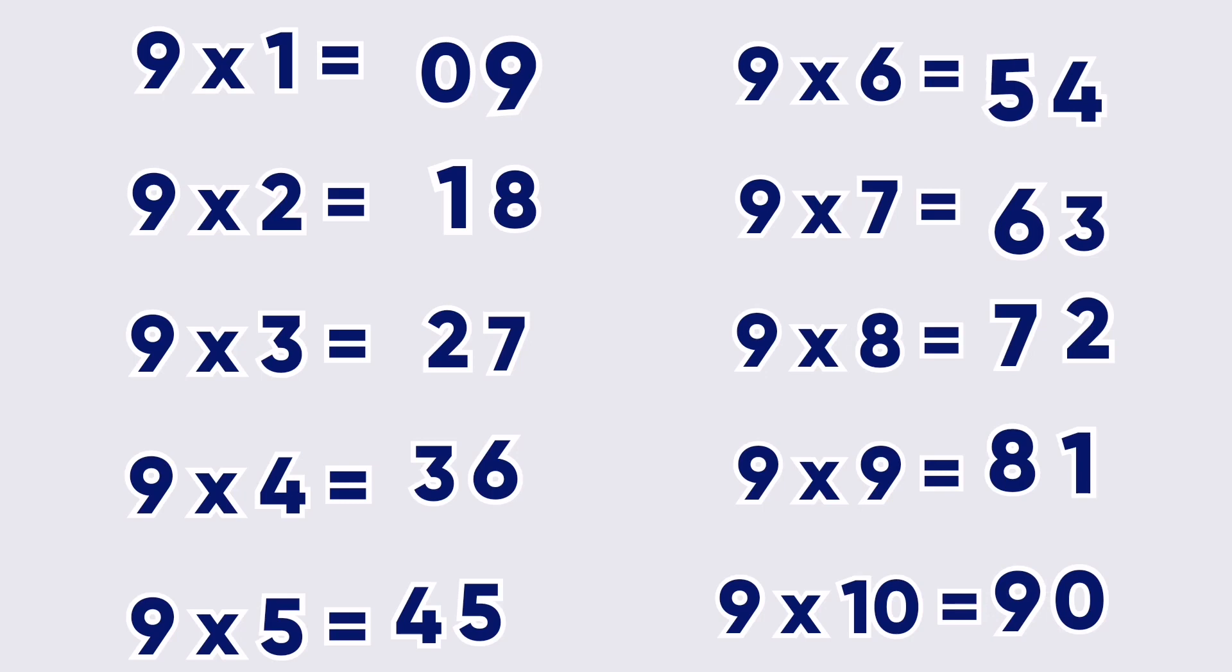And that leads us to our answer. So 9 times 1 equals 9, 9 times 2 equals 18, 9 times 3 equals 27, 9 times 4 equals 36, 9 times 5 equals 45, 9 times 6 equals 54, 9 times 7 equals 63, 9 times 8 equals 72, 9 times 9 equals 81, and 9 times 10 is 90.